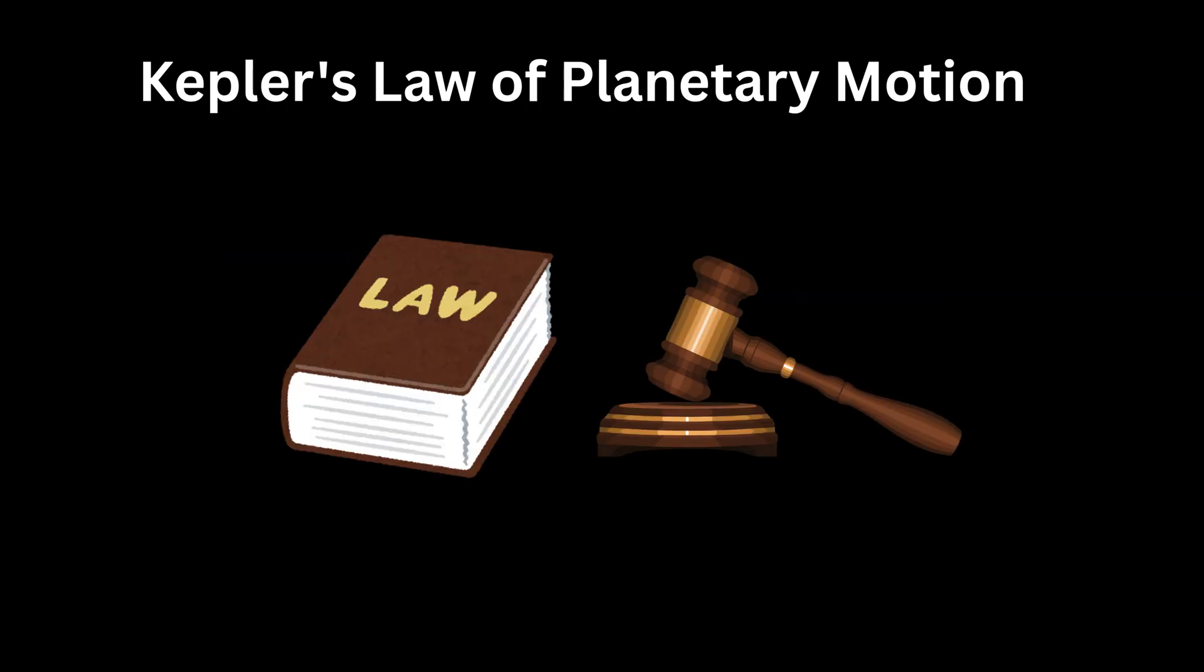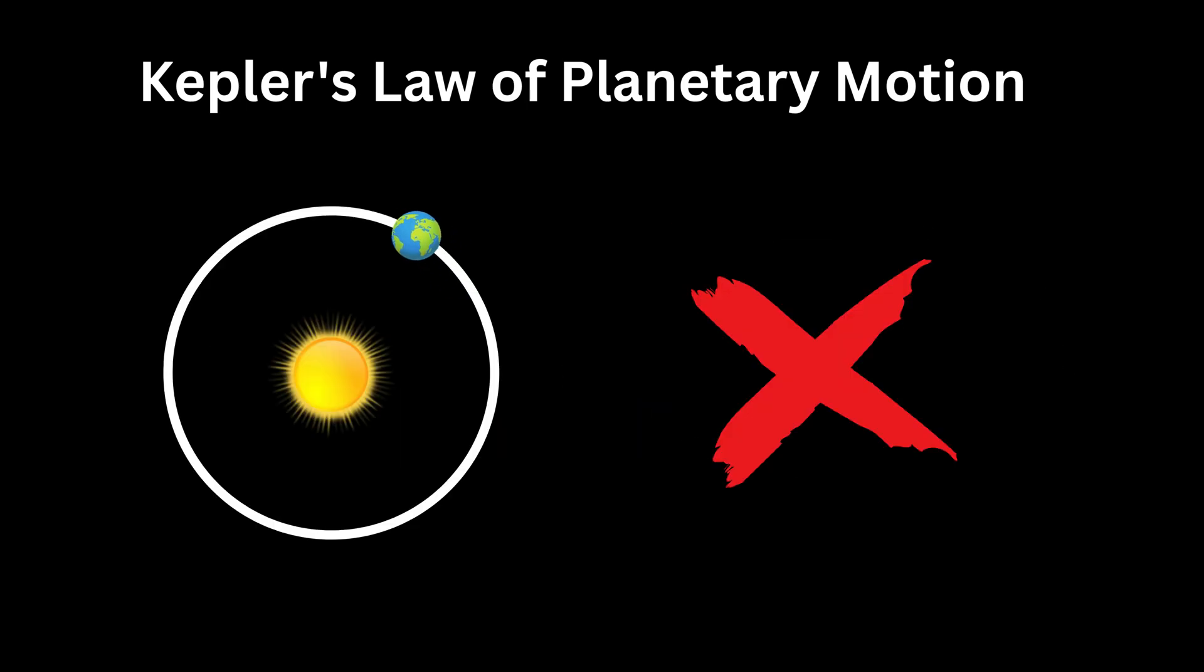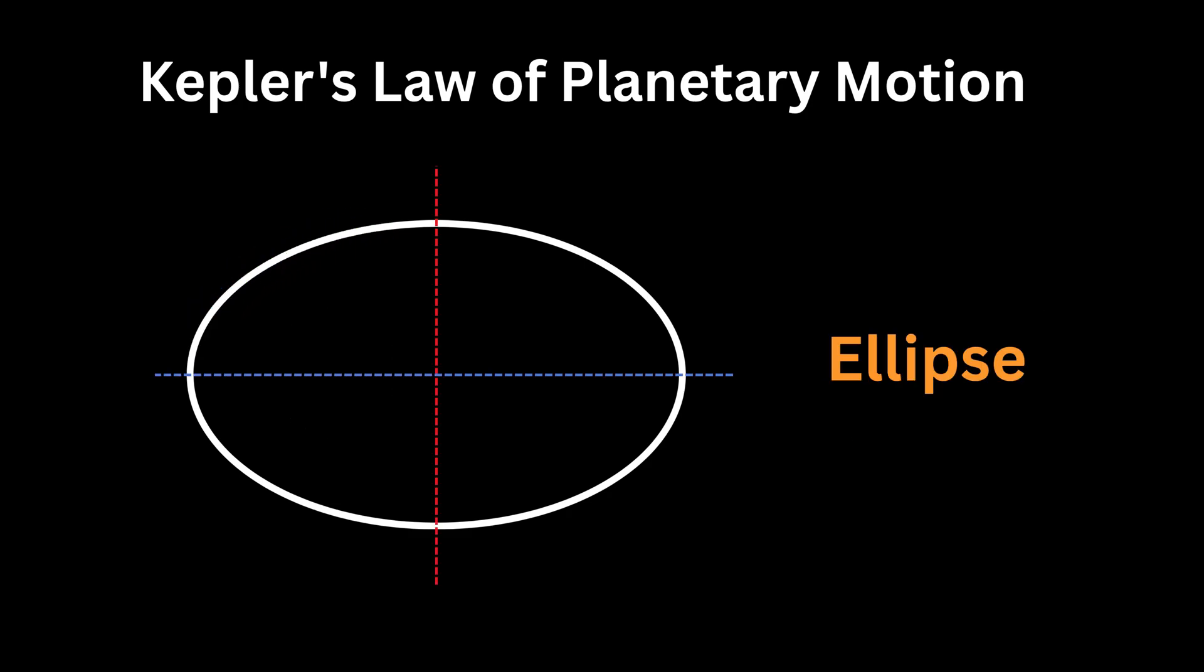Let us talk about all three laws one by one. First Law: This law is also known as the Law of Ellipses. The path each planet follows around the sun is not a perfect circle but an ellipse, which you can think of as a stretched circle. This is a picture of an ellipse. An ellipse has two special points called foci.